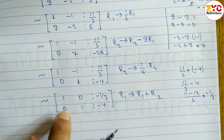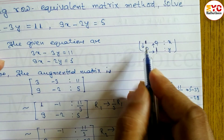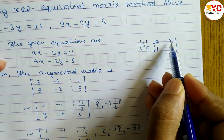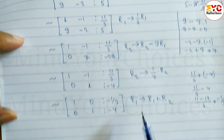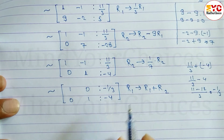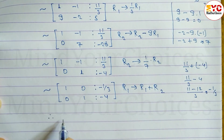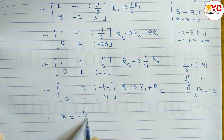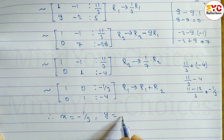Now we have the identity matrix 1 0 / 0 1 on the left side. The first value on the right is the value of x and the second is the value of y. Therefore, x is equal to minus 1 by 3, and y is equal to minus 4.